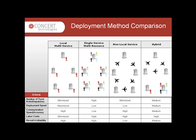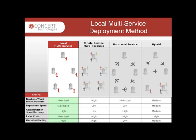There are four primary deployment methods used for nationwide and international technology rollouts. Each deployment method is evaluated in terms of the number of truck rolls or dispatches, speed of deployment, communication speed and accuracy, labor costs, and the availability of technicians for site revisits.